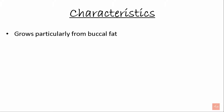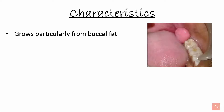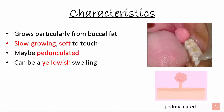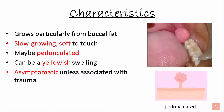Characteristics of oral lipoma: it grows particularly from buccal fat. It is slow growing and soft to touch. It may be pedunculated and can appear as a yellowish swelling. It is asymptomatic unless associated with trauma, and is sometimes painful — lipomas can be painful if they grow and press on a nearby nerve or if they contain a lot of blood vessels.